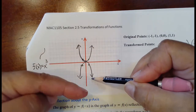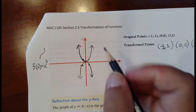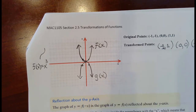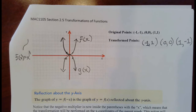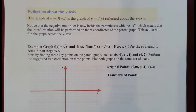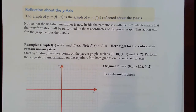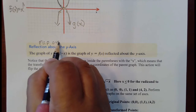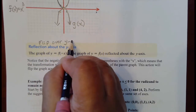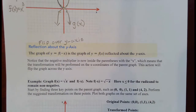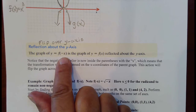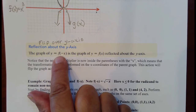Now we're going to reflect across the y-axis — flip it over the y-axis. You'll see a flipping across the y-axis when the negative is inside the parentheses with the X. You're going to take all the X's and multiply them by negative one — switch their sign. That's going to cause your graph to flip across the y-axis. Notice the negative multiplier is now inside the parentheses with X, which means you perform the transformation on the X coordinates, not the Y's.